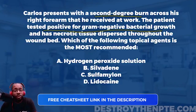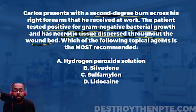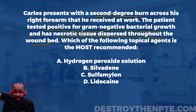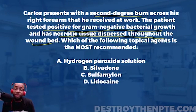The patient also has necrotic tissue dispersed throughout the wound bed, so there's dead tissue we need to address. The question asks which topical agent is most recommended — meaning you need to pick one that addresses all three: the second degree burn, the gram-negative bacterial growth, and the necrotic tissue. The answer must satisfy all three; picking something that addresses only two won't be correct.